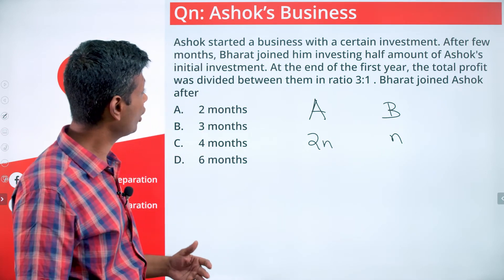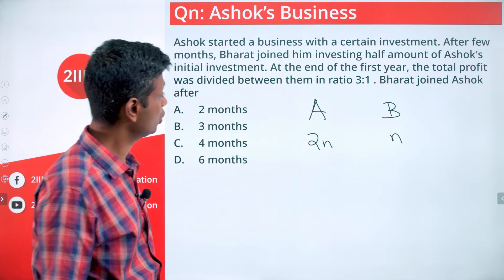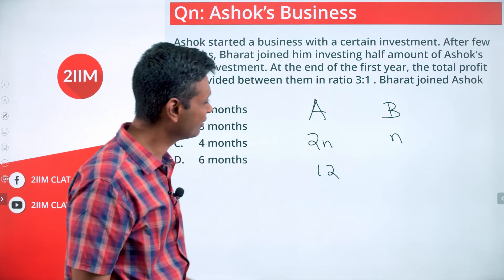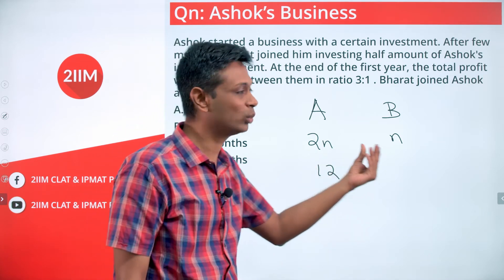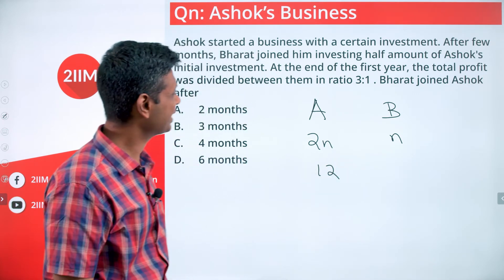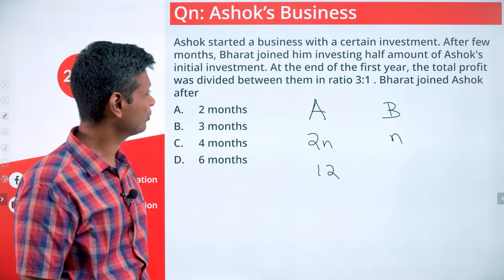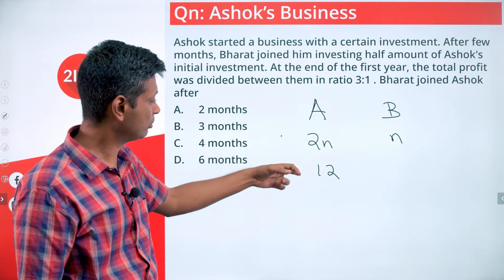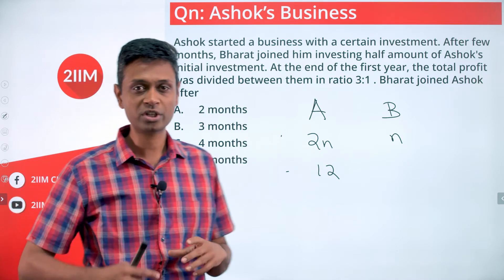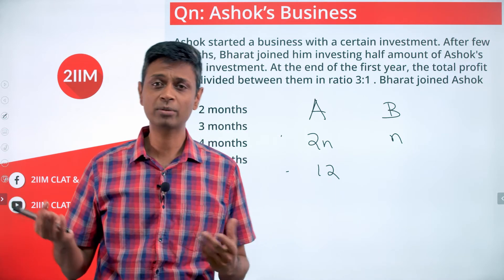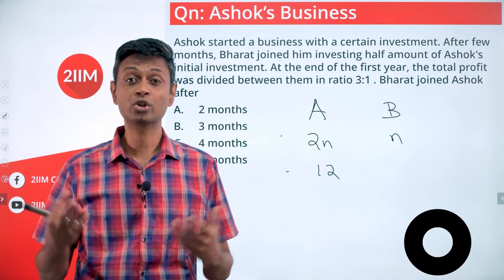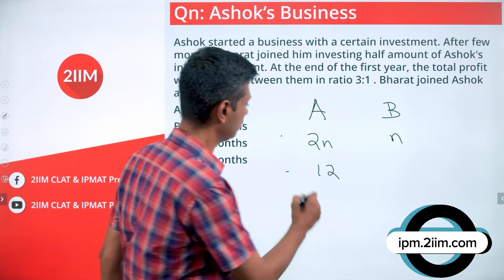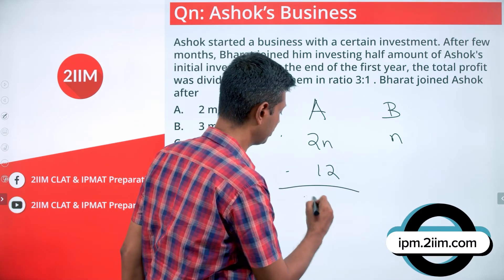Bharat joins a little late. Ashok has invested for 12 months, while Bharat has invested for fewer than that. They should be sharing the money in the ratio of investment multiplied by number of months — if you've invested for longer or in a bigger amount, you should get more money. So Ashok's share is 2N into 12, which is 24N.